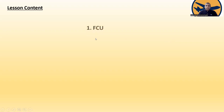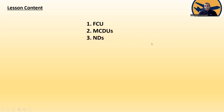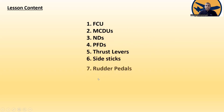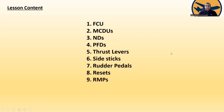The lesson content covers: number one, FCU — Flight Control Unit; next, the MCDU; the NDs — Navigation Displays; the PFDs — Primary Flight Displays; the thrust levers; the side sticks; the rudder pedals and resets; the RMPs — Radio Management Panels; the EWD/SD — Engine Warning Display and System Display; and finally, the attention getters.